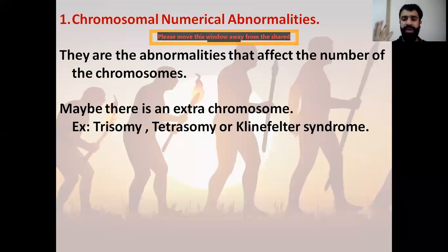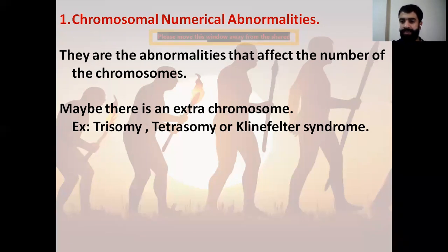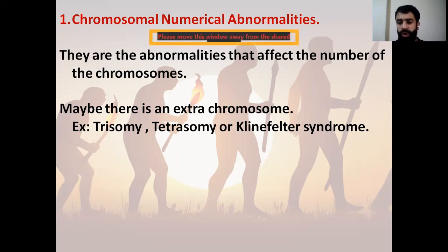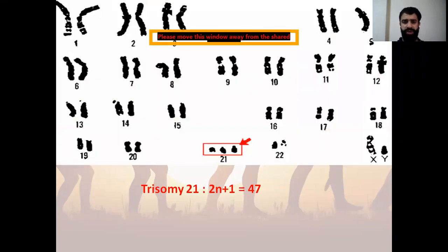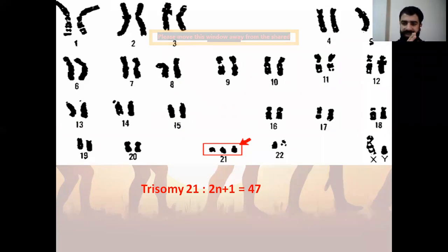Klinefelter syndrome is an abnormality at the level of the gonosomes, or the sex chromosomes, where we have XXY. So whenever we talk about Klinefelter syndrome, this is an abnormality at the level of the gonosomes. The karyotype is the arranged set of chromosomes that reveals if we have an abnormality at the level of the number of chromosomes — it shows chromosomal numerical abnormality, not structural.